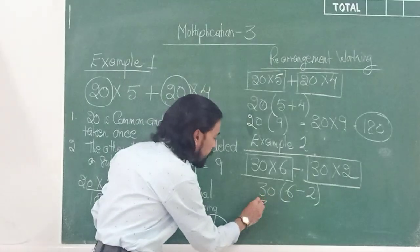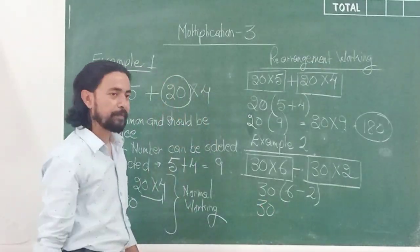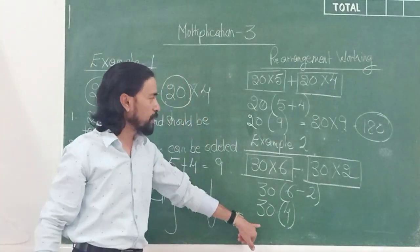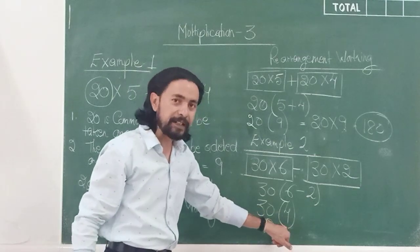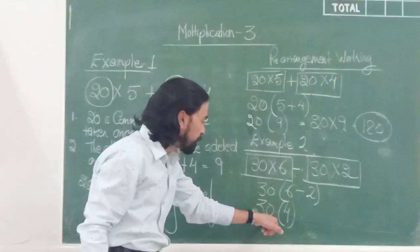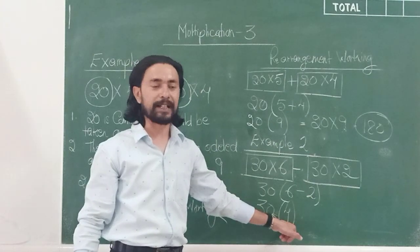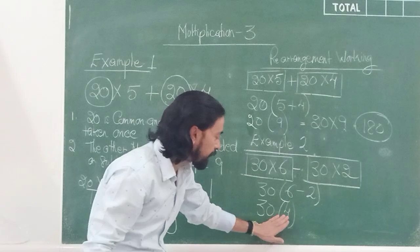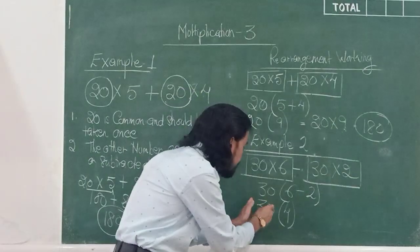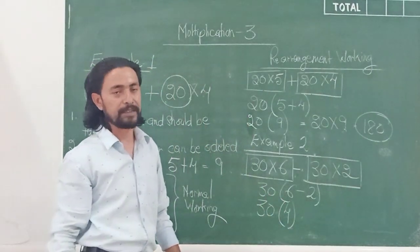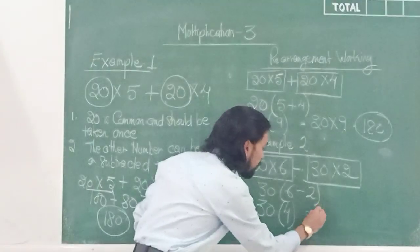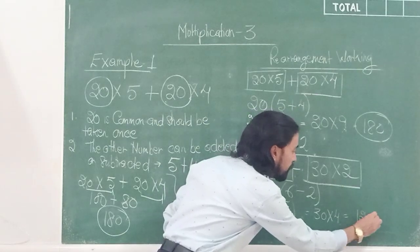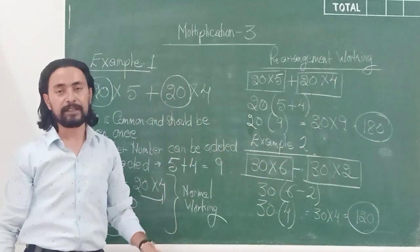Now I work out the sum. 30 remains as it is. 6 minus 2 is 4. So I have 30(4). A number outside the bracket with a number inside — no sign — means multiply. So 30 into 4 gives 120, and that is my answer.